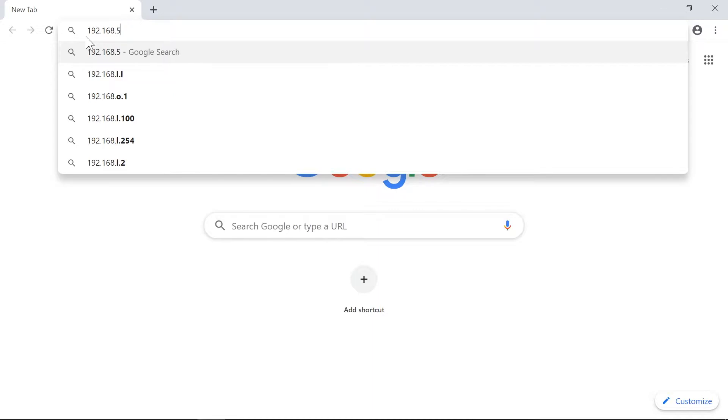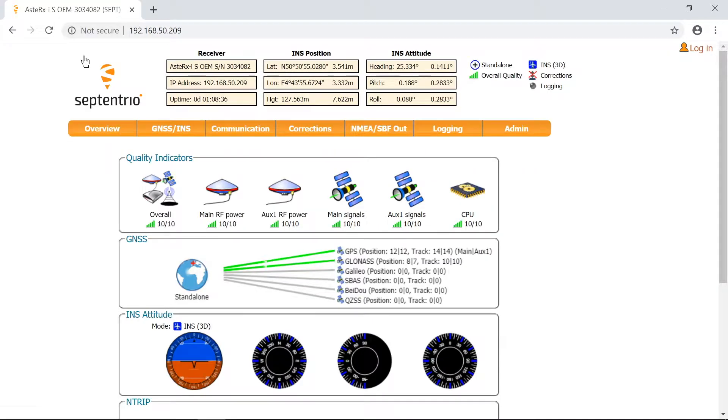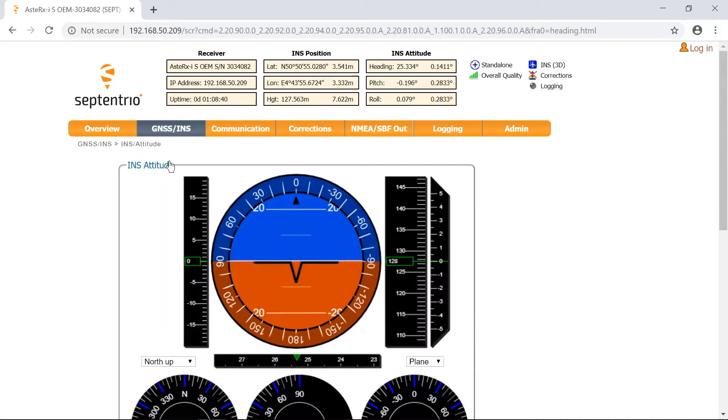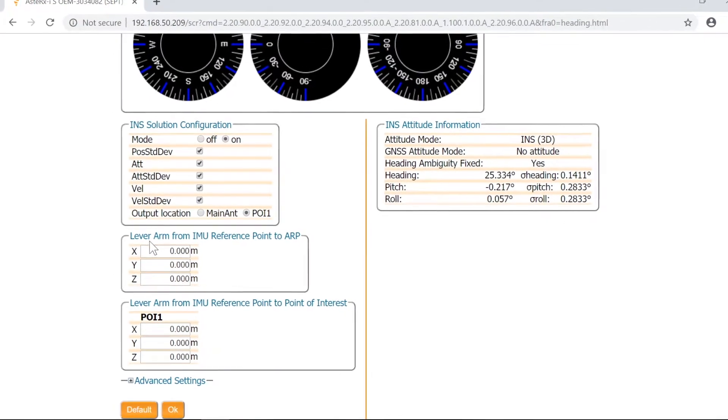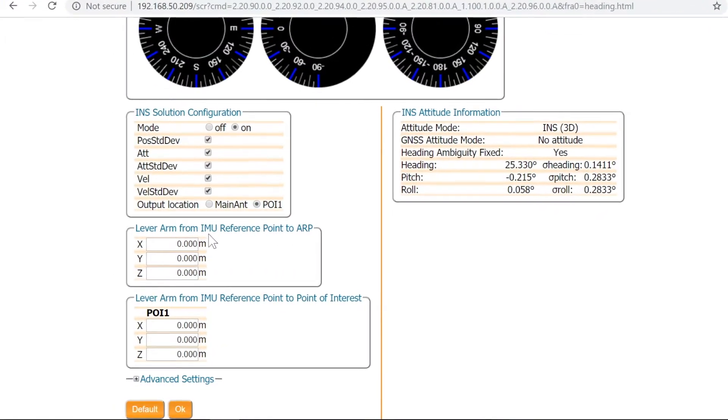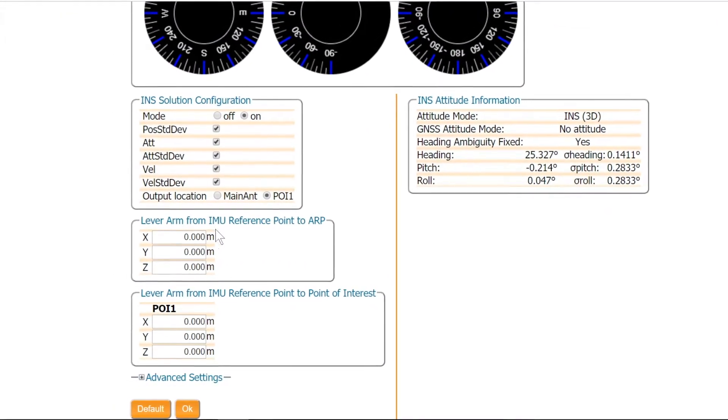Open the web interface of the receiver. Go to GNSS INS, select INS attitude and scroll down. There's a box named Lever arm from IMU reference point to ARP. And of course this is what we're currently interested in.